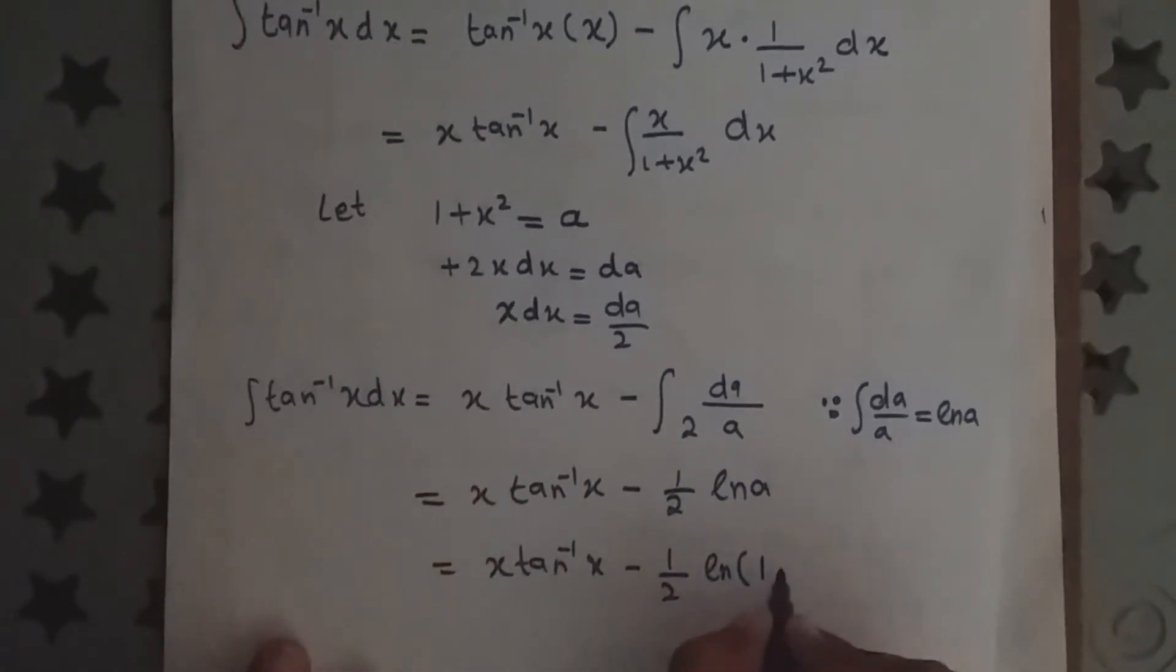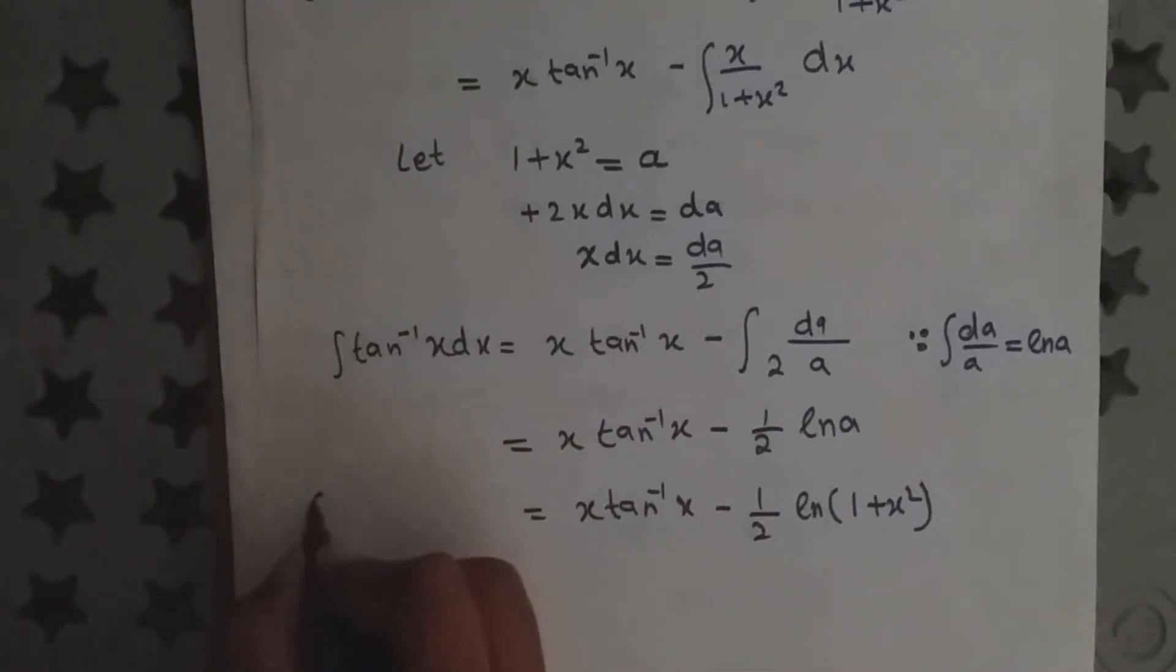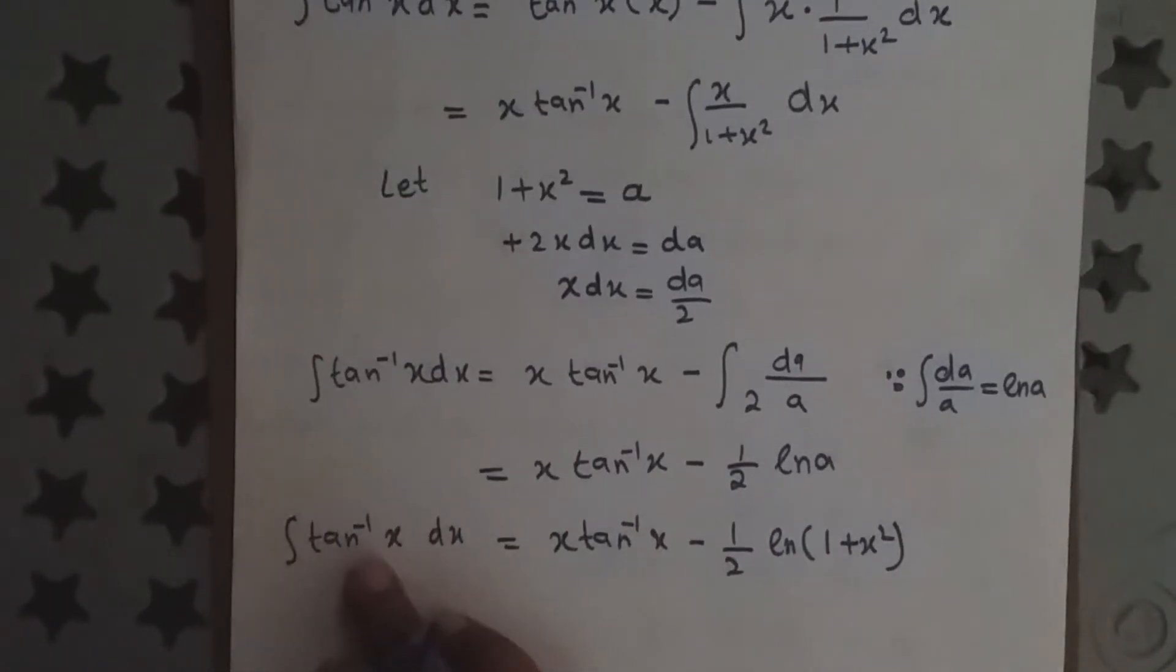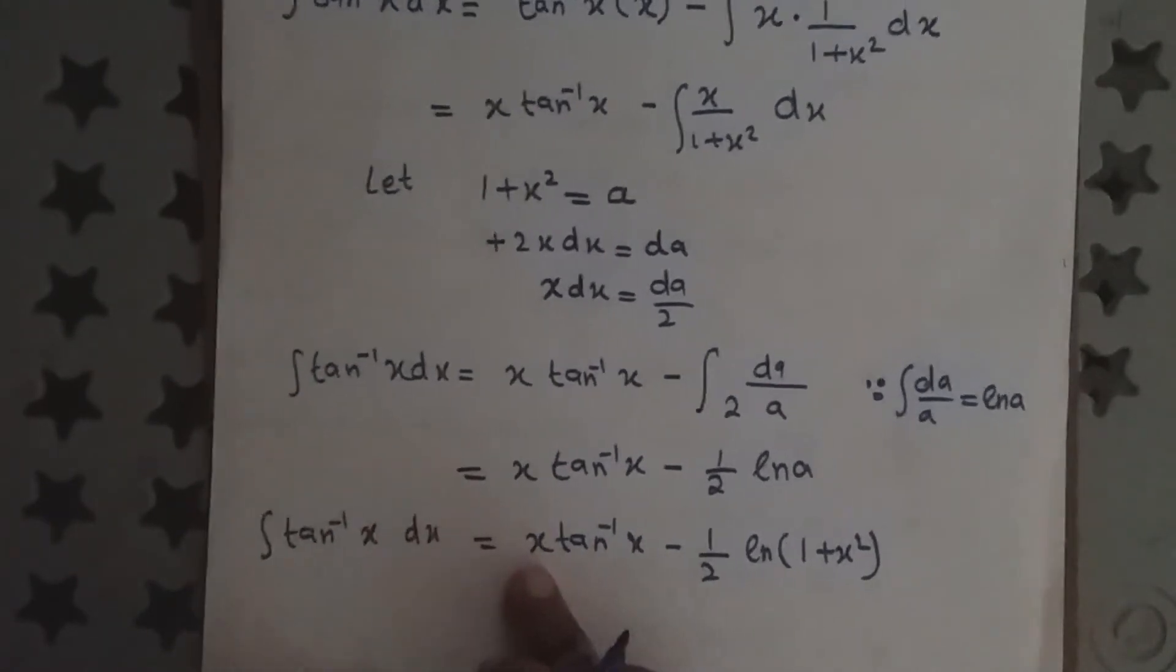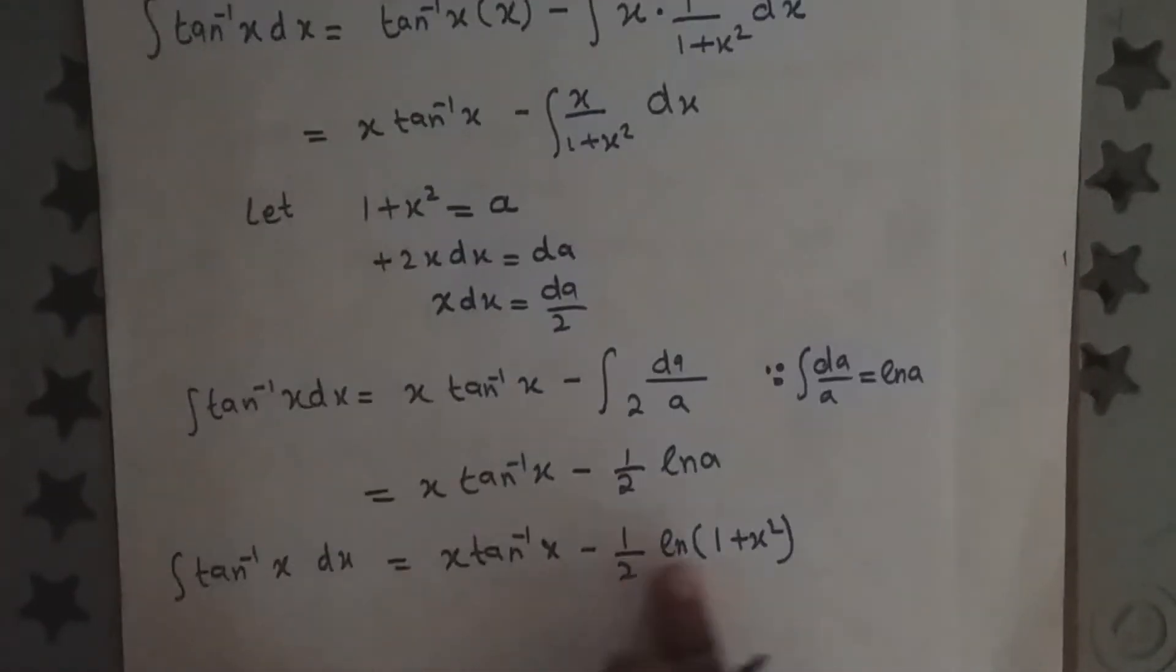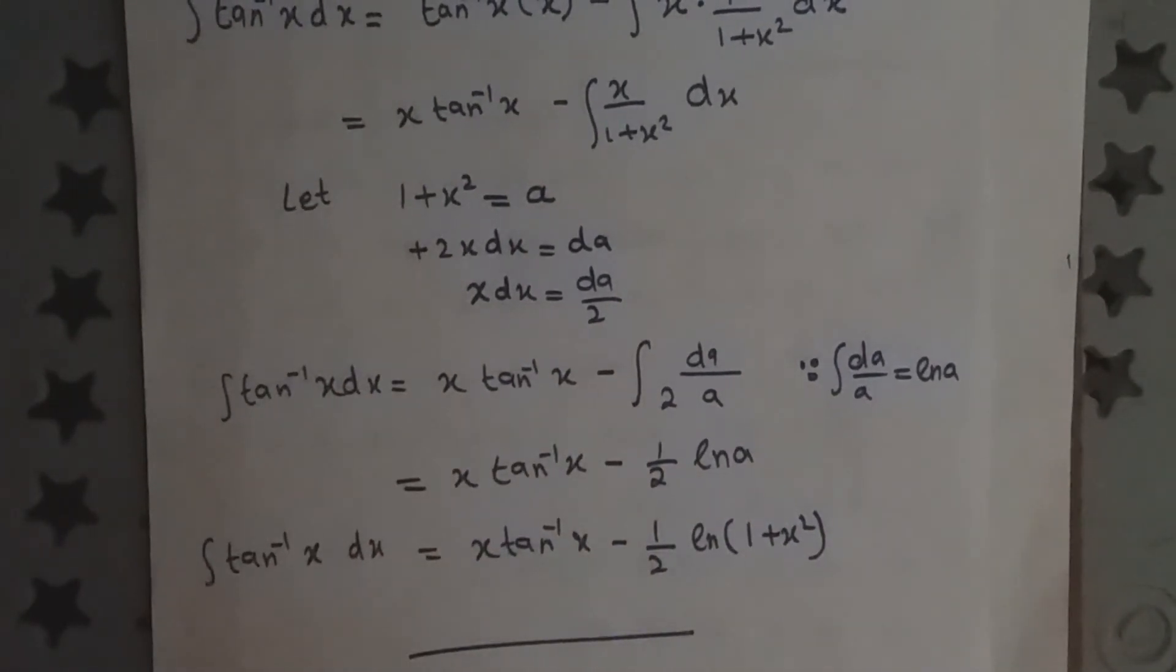Substituting back, a equals 1 plus x square. Hence, integration of tan inverse x dx equals x tan inverse x minus 1 over 2 ln of 1 plus x square. Thank you.